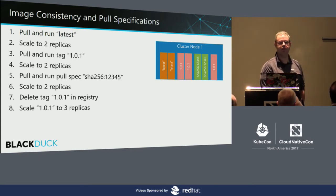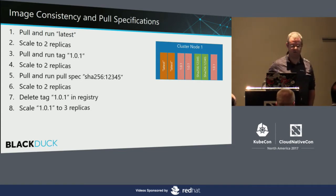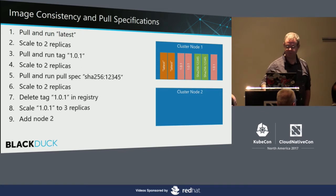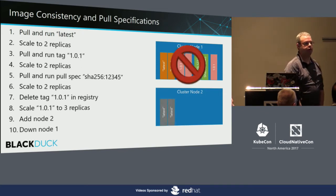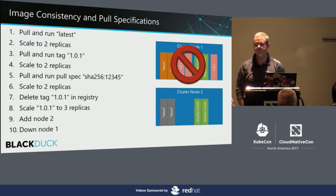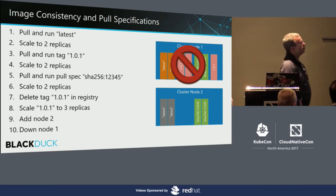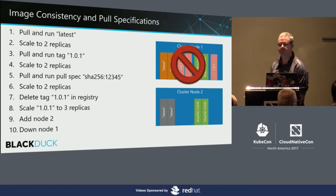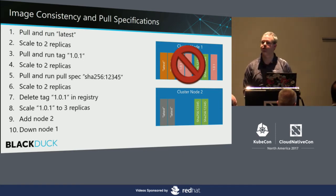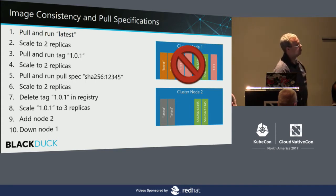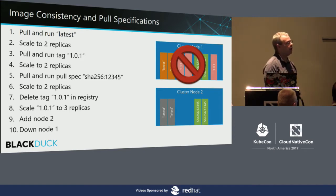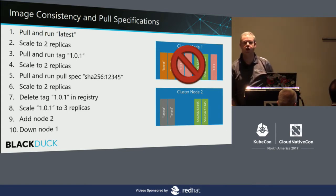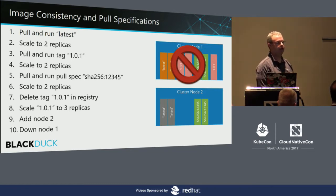Tags themselves are human-definable, mutable things. If I want to go and push something else and re-tag it as 1.0.1, I can change the behavior under the covers. Now let's add a second node and kill the first. The orchestration solution has survivability on the images, but some time has passed. So 'latest' is whatever got pulled down at the time I started that second node. It could very easily be different than what you started out with. The SHA-256 pull spec will be the same — assuming it hasn't been deleted. As you scale your infrastructure, the trust of your nodes and behavior of your applications can change.